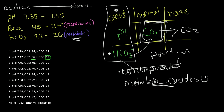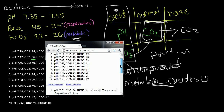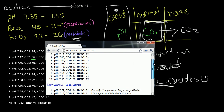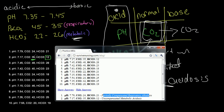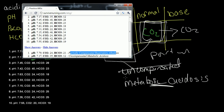Let's double-check these first two answers. Let's bring this website back over here and click show answers. This first one was partially compensated respiratory alkalosis — that was our first problem. And this new one that we just solved was uncompensated metabolic acidosis. This matches our problem.